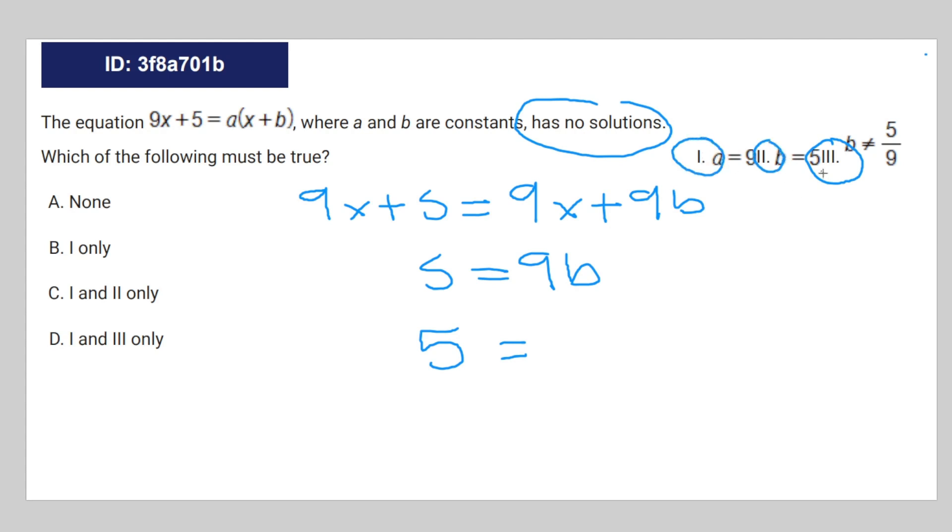b technically could be equal to 5, but that's not what the question is asking. The question is asking what of the following must be true. And therefore, the correct answer is d.